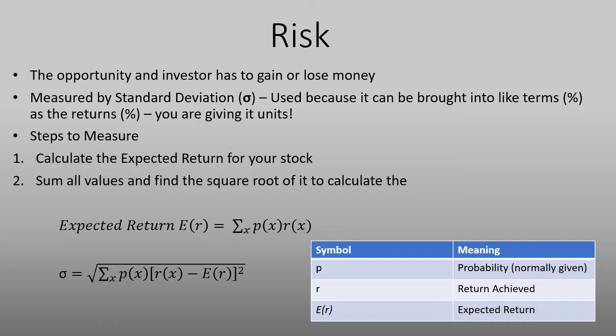So expected return, multiply your probabilities times the return. And in standard deviation, you add up the probabilities multiplied by the difference of the return minus the expected return from the portfolio squared. And then you find the square root of that sum.